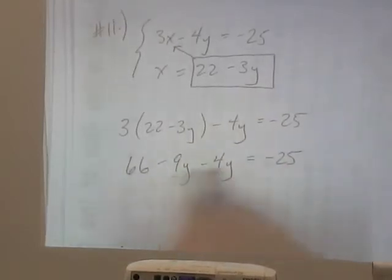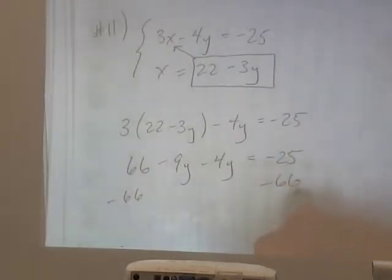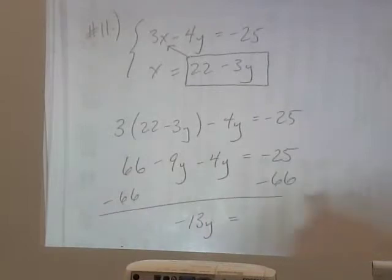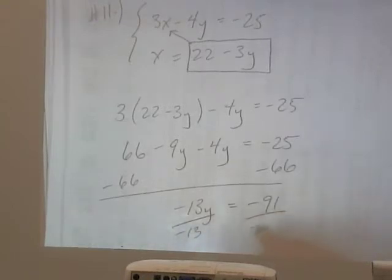So we can combine those two. Subtract the 66 over. But negative 13y is equal to negative 91. And divide by negative 13. So y is equal to 7.